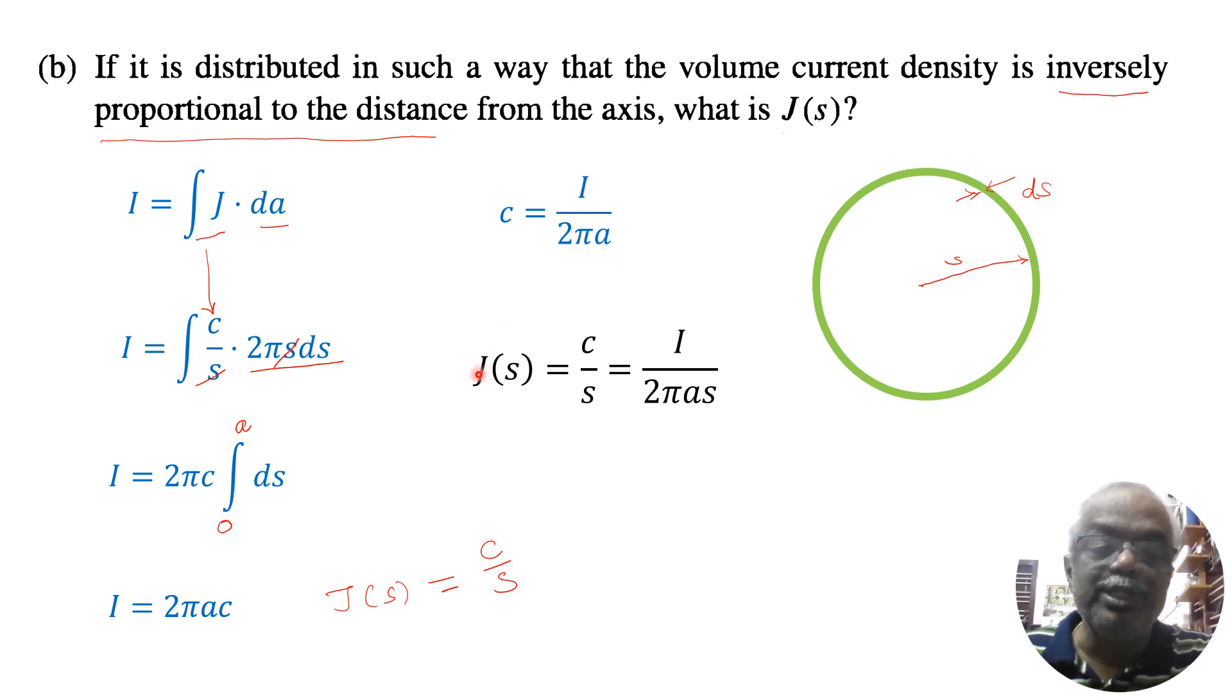Now we know the J(S) is equal to C over S. That is C we have found, I over 2πA, and this S comes. This is the current density for this case.